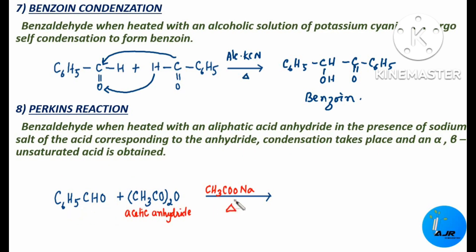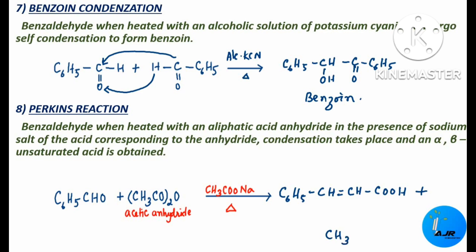Benzaldehyde when heated with acetic anhydride in the presence of sodium acetate, we get cinnamic acid. The product is cinnamic acid: C6H5–CH=CH–COOH, plus acetic acid CH3COOH. This is cinnamic acid — also a very important reaction.